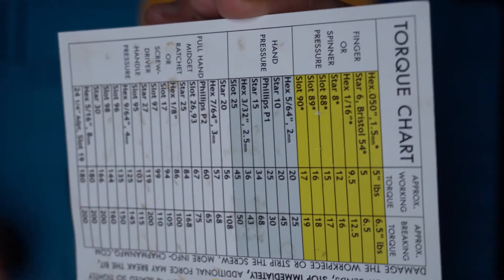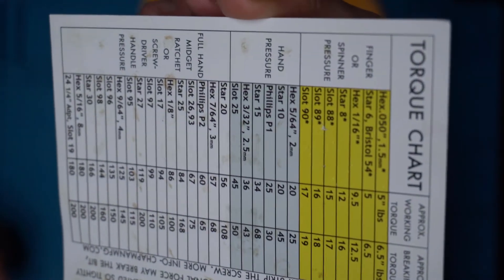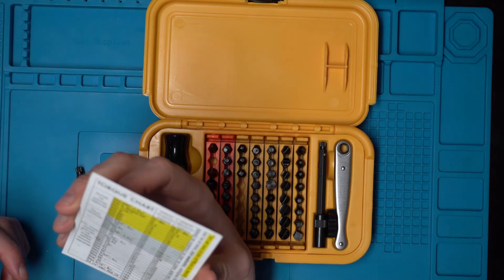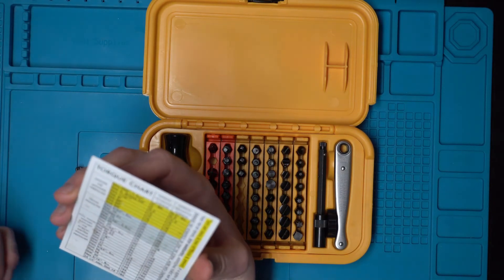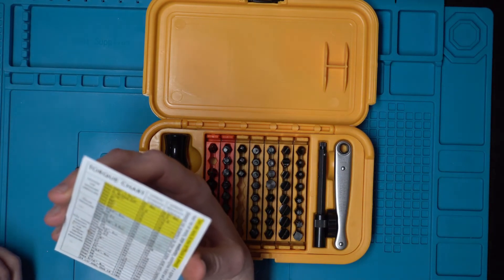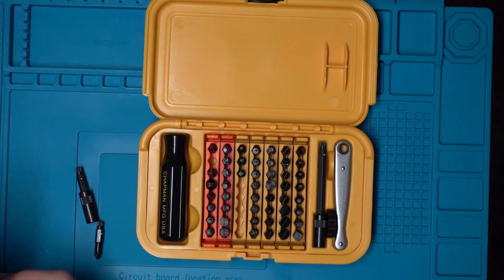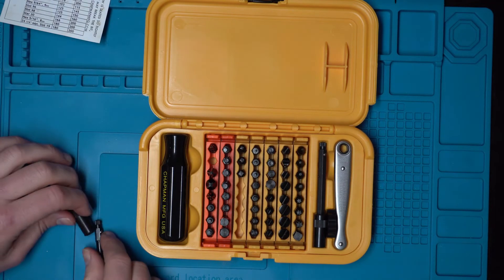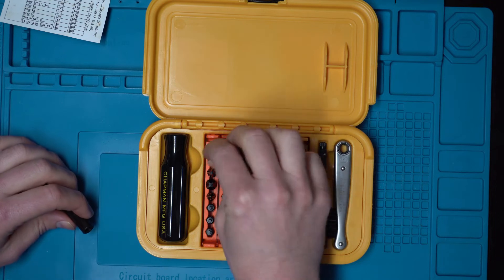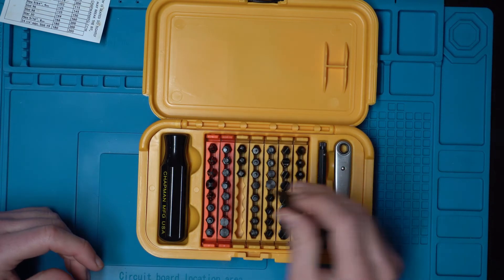The only cons that I can see when doing my research is they said that some of these bits break, but it leads me to believe that people are probably using these improperly because the kit comes with a torque chart that shows the approximate working torque and the approximate breaking torque for all the bits, which is rated in inch-pounds, which to me shows that it is a high quality kit because they take the time to do that.